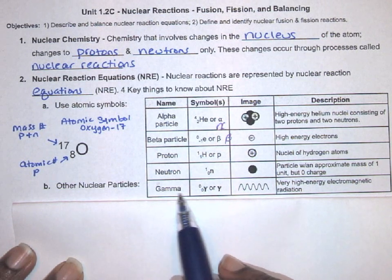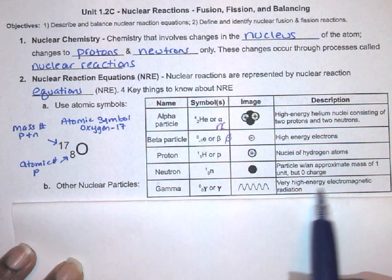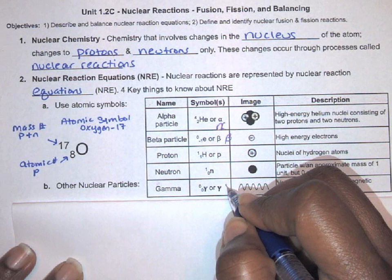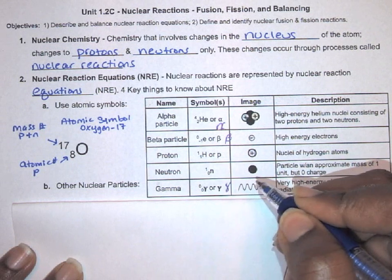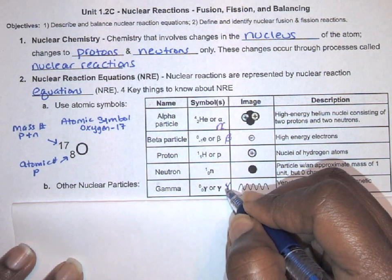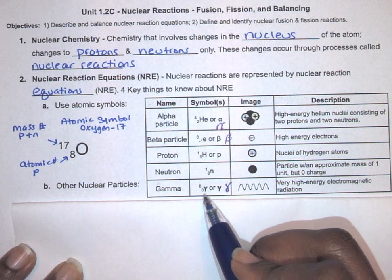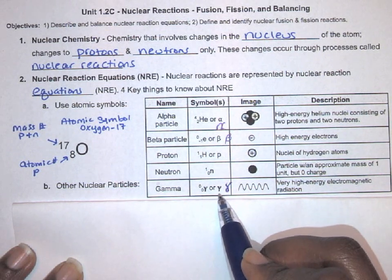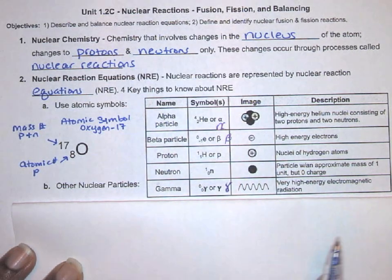Finally, we have gamma. A gamma is a high-energy photon of light, and it has a symbol that kind of looks like a Y. If I were to draw it, it would look like this—kind of like drawing a loop. It has no mass and no charge, so both of those numbers are zero. You can draw it with the numbers or without the numbers. These are the symbols that we need to know.